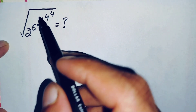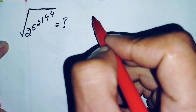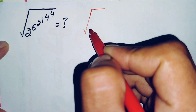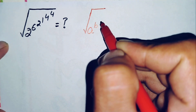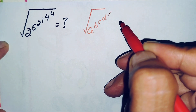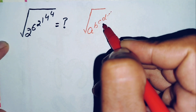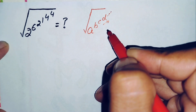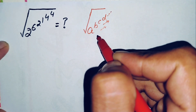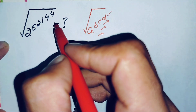To solve this problem, we need to remember a key result: when we have a square root of a raised to power b, raised to power c, raised to power d, and so on, we solve from top to bottom. First we solve c raised to power d to get a number, then b raised to that number, and finally a raised to that result.